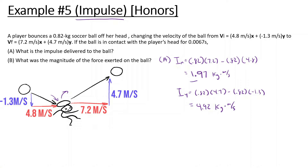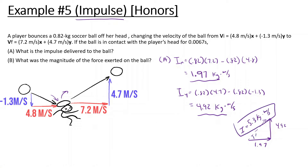Now for the y direction: impulse equals 0.82 times velocity final in y (4.7), minus 0.82 times velocity initial in y (negative 1.3), which gives us 4.92 kg·m/s. Since momentum is a vector, we find the total impulse using the Pythagorean theorem: square root of 1.97 squared plus 4.92 squared, giving us 5.3 kg·m/s. For the direction, inverse tan of 4.92 divided by 1.97 gives an angle of 68.2 degrees.